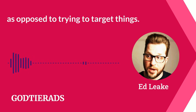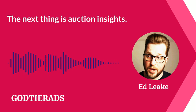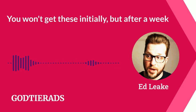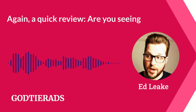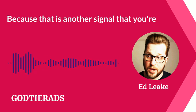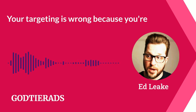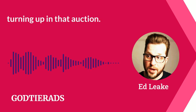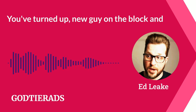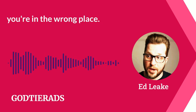The next thing is auction insights. You won't get these initially, but after a week they should start to populate. Do a quick review — are you seeing competitors that aren't actually your competitors? Because that's another signal that you're in the wrong place; your targeting is wrong because you're turning up in that auction. It's not normally that their targeting is wrong — they're established. You've turned up as the new guy on the block and you're in the wrong place.